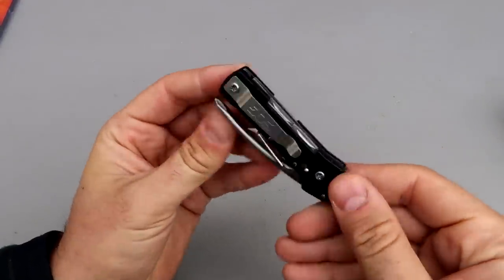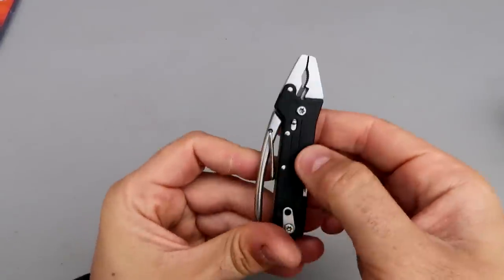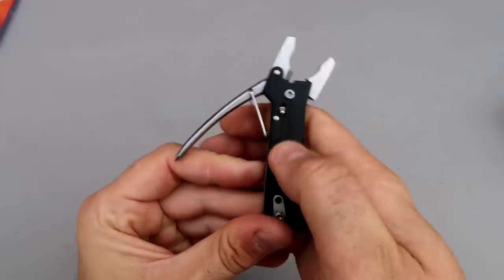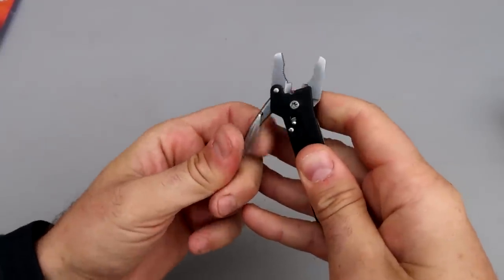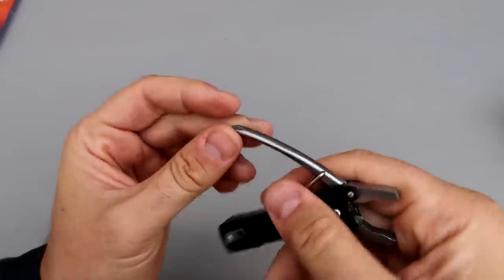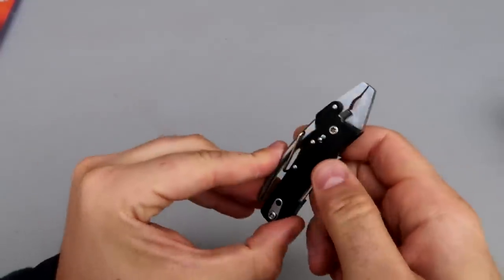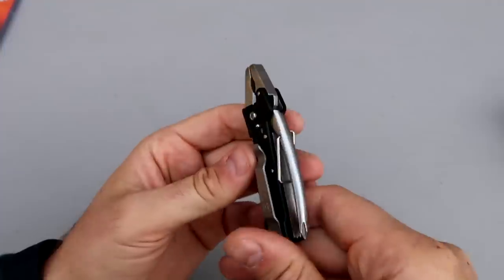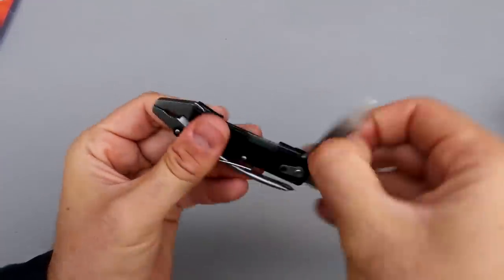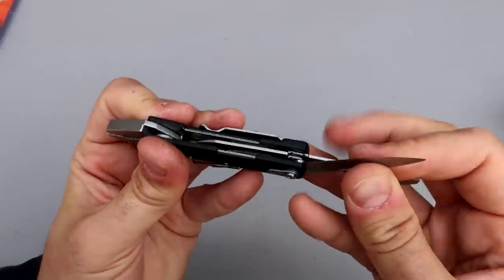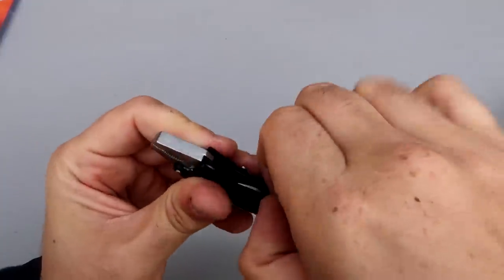Another vintage SOG multi-tool, check this out. This one has a little safety. Then I guess the spring is right here. Inside there is a little screwdriver, Phillips, then you lock it in. What else we have here? Nail file, screwdriver I guess, pretty decent knife.